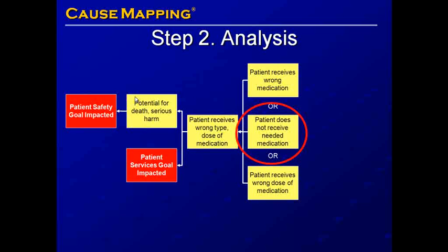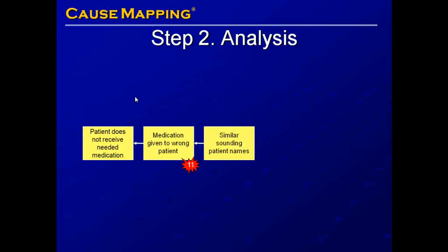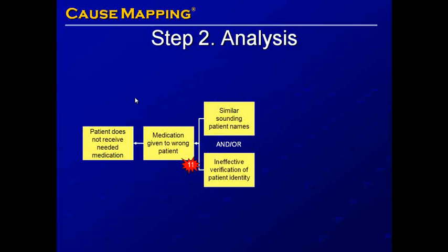We're going to add additional detail to the patient not receiving needed medication. The patient may not receive needed medication if the medication is given to the wrong patient — an error at step 11 in the process. This may occur because of similar sounding patient names and an ineffective verification of the patient identity.